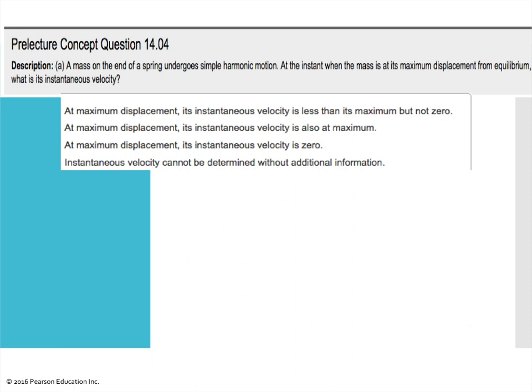All right, a mass on the end of a spring undergoes simple harmonic motion. When the mass is at its maximum displacement from equilibrium, what is its instantaneous velocity? We want to remember that this is a turnaround point, and so because of that the velocity has to be equal to zero. If it was moving at the maximum displacement it would be displaced more because it could keep moving, so we want to remember that the velocity is zero at that point.